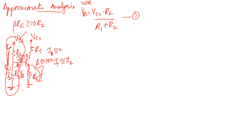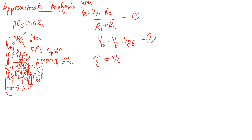The total voltage from base to ground is VB, and from base to emitter it is VBE, so VE equals VB minus VBE. That is equation 2. Then IE equals VE divided by RE (Ohm's law) — equation 3. IC is approximately equal to IE, so IC equals VE divided by RE — equation 4.